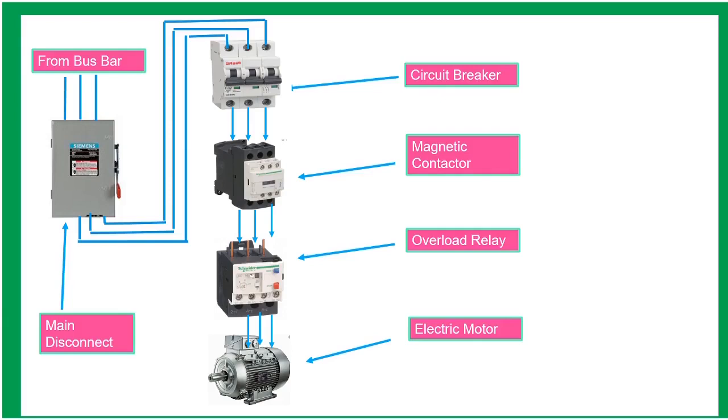Contactor is an electrically controlled switch used for switching higher current. Overload relay is designed to protect the motor from prolonged overcurrent, which causes overheat and destroys the motor. And the last one is the electric motor, a machine that converts electrical energy to mechanical energy.